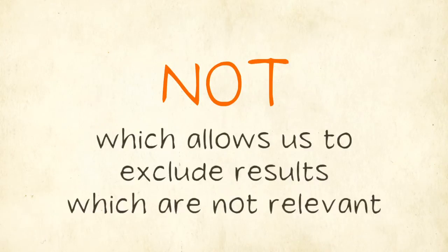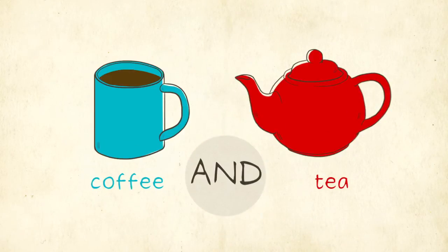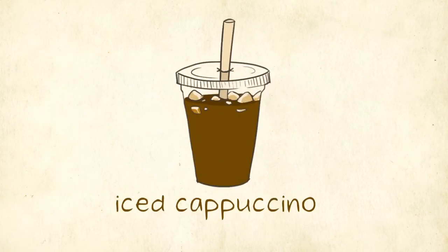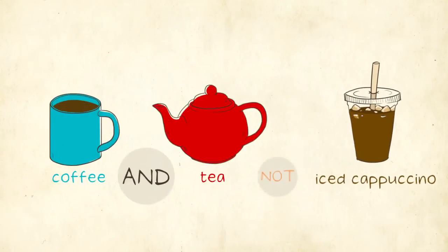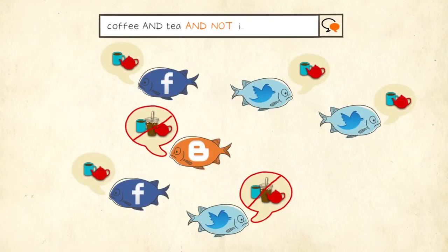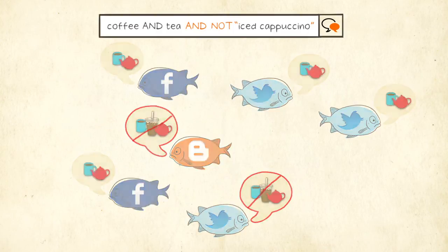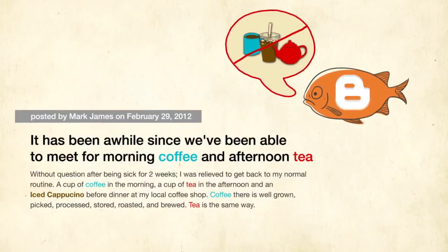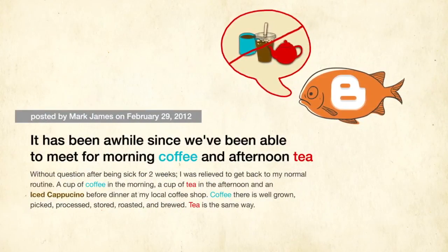Our last operator is NOT, which allows us to exclude results which are not relevant to us. Revisiting our previous search of coffee and tea, let's say we are not interested in conversations about iced cappuccinos. Adding NOT iced cappuccinos will prevent any conversations that include that phrase from appearing in your results. It's important to always enter AND in front of NOT in order for your search to work correctly, and to add quotation marks around 'iced cappuccino' so the search only looks for that exact phrase. Here is an example of a blog post that contains all three of our search terms and will not be included in our results.